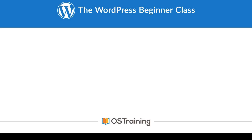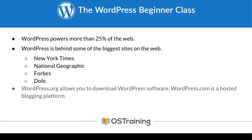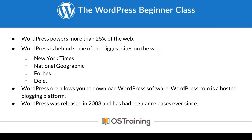Let's do a quick recap. WordPress powers more than 25% of the web and it's behind some of the biggest sites on the web — The New York Times, National Geographic, Forbes, and Dole. WordPress.org allows you to download WordPress software, while WordPress.com is a hosted blogging platform. WordPress was released in 2003 and has had regular releases ever since. This means you can depend on it to be there for the long term — you're not going to build your site and in a year or two or five have it just disappear on you. WordPress will be around for a long time and you can count on it.